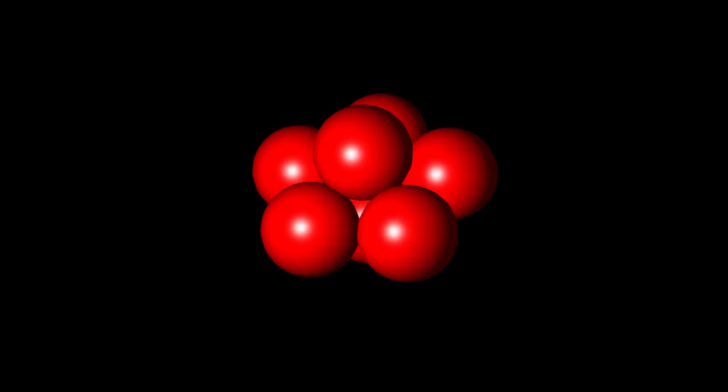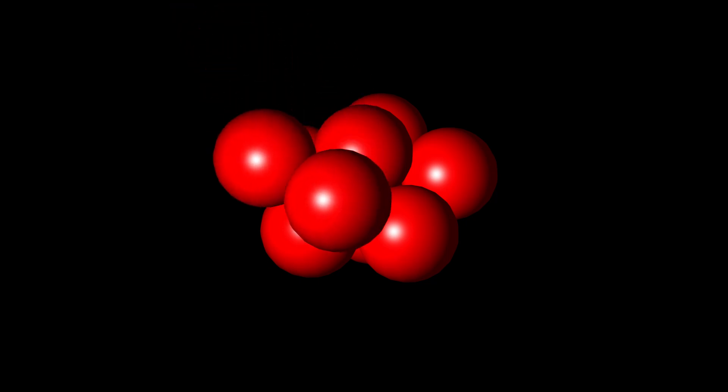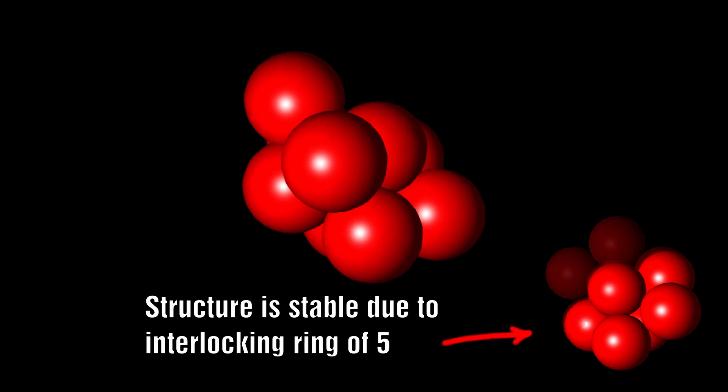If we go back to the seven sphere model and now add two spheres on top, we create a stable but unbalanced structure with nine spheres.